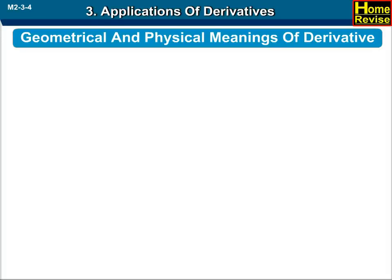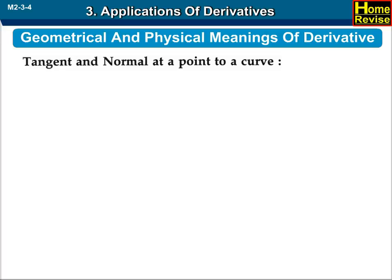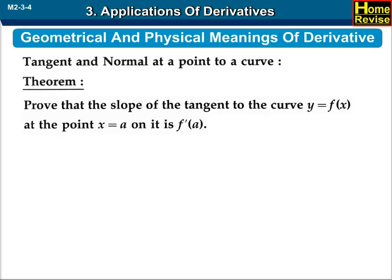Now, let us see section 3.1: Geometrical and physical meanings of derivative. Let us begin with tangent and normal at a point to a curve. Theorem: The slope of the tangent to the curve y equals f of x at the point x equals a on it is f prime of a.